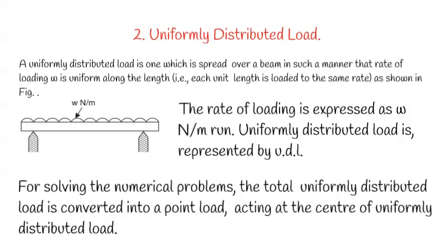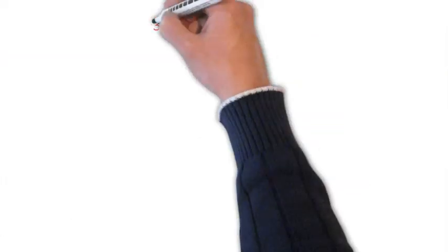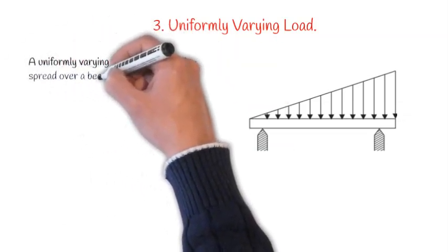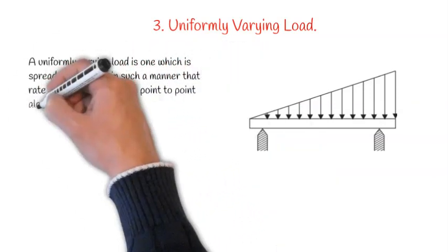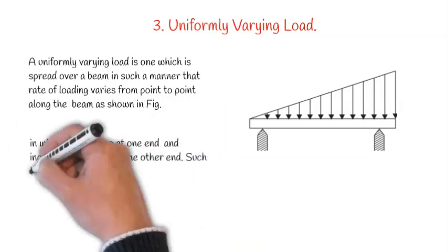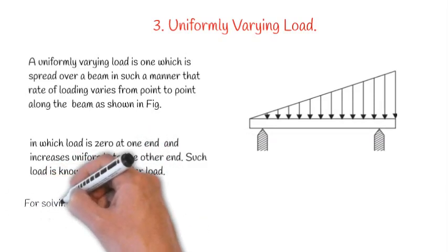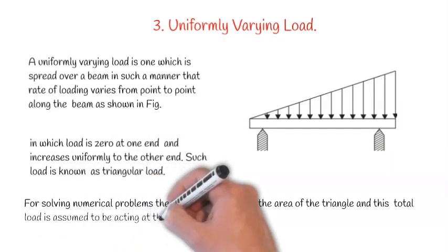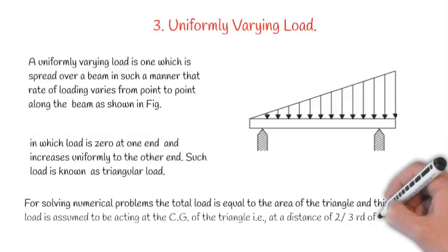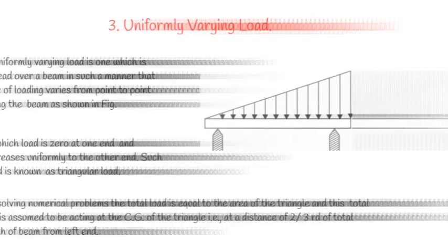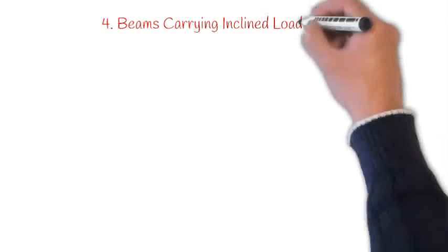3. Uniformly Varying Load: As shown in figure, a uniformly varying load is one which is spread over a beam in such a manner that the rate of loading varies from point to point along the beam. The load is zero at one end and increases uniformly to the other end. Such load is known as triangular load. For solving numerical problems, the total load equals the area of the triangle and this total load is assumed to be acting at the CG of the triangle, that is at a distance of two-thirds from one side.